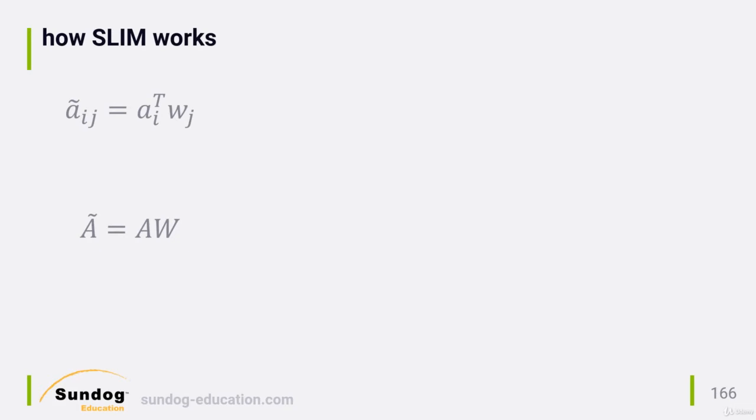Both A and W are sparse matrices, meaning they contain incomplete data, just the ratings that actually exist. So the secret sauce is in how W is computed, and this is where it gets complicated.